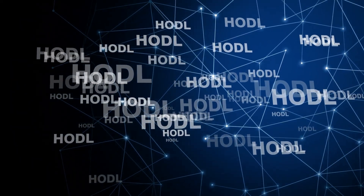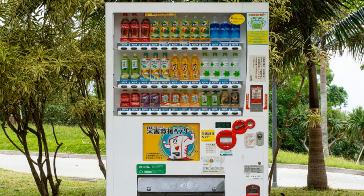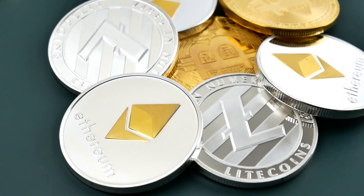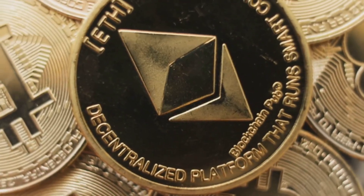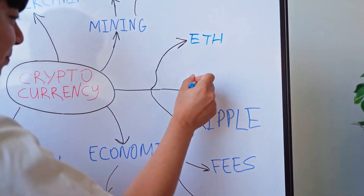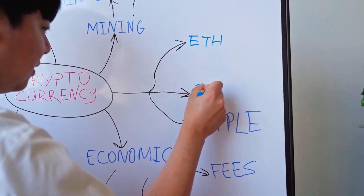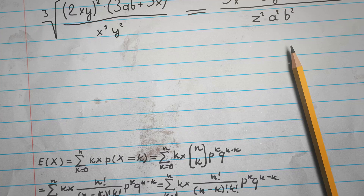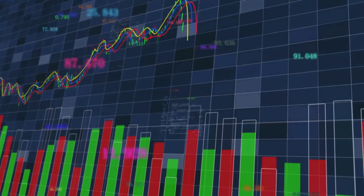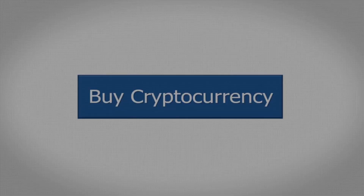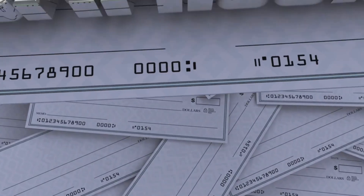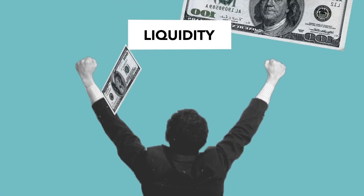Now let's check out the liquidity pool, the magical vending machine of crypto. Instead of matching buyers and sellers, a liquidity pool is a pot of two assets, like ETH and USDC, locked in a smart contract. Users called liquidity providers, or LPs, supply these assets. Prices are set by a formula: X times Y equals K. As you trade, the ratio changes and so does the price. Buy ETH with USDC and the price of ETH goes up for the next buyer. LPs earn a small fee from every trade, rewarding them for providing liquidity.